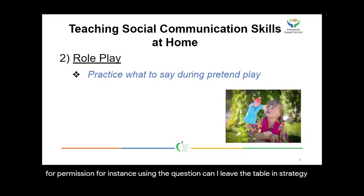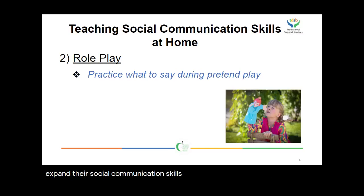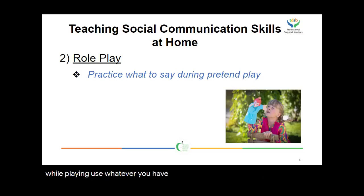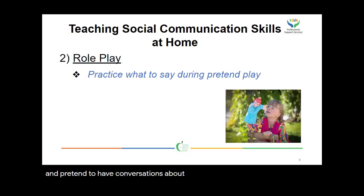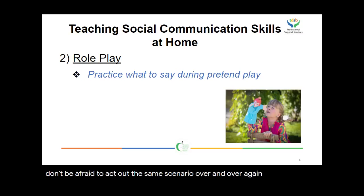The second strategy is role playing. Role playing is another fun and effective way to help your child expand their social communication skills. Role playing is simply practicing what to say in different situations. For children, role playing is great within pretend play. While playing, use whatever you have in the way of dolls, action figures, or puppets, and pretend to have conversations about familiar events or situations like making breakfast, going to a movie or Tim Hortons, or saying sorry to a friend. Don't be afraid to act out the same scenario over and over again, because the repetition will help your child remember what to say.